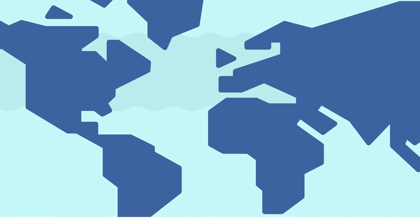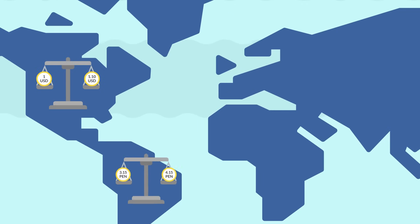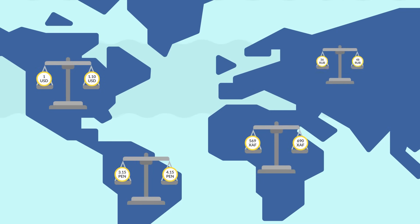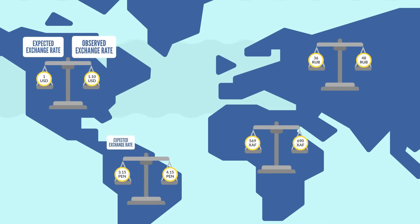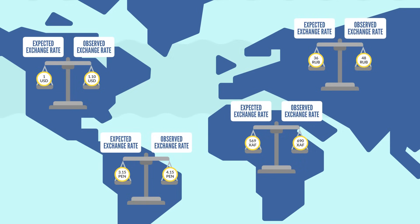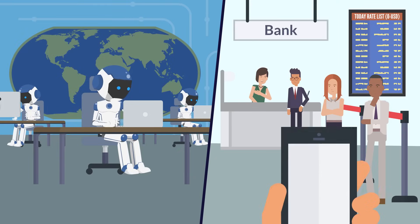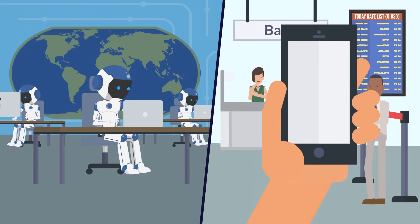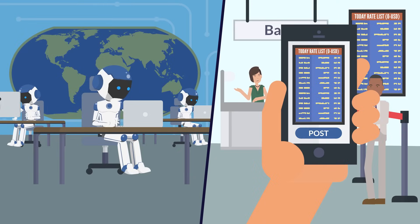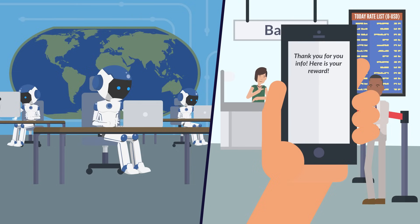Second, we need to control the stability of the value we defined in the previous step, so we need to observe exchange rates between the O coins and other currencies. To do so, we will use online bots and offline measurements made by randomly picked users who will be rewarded with coins for posting or validating exchange rates.